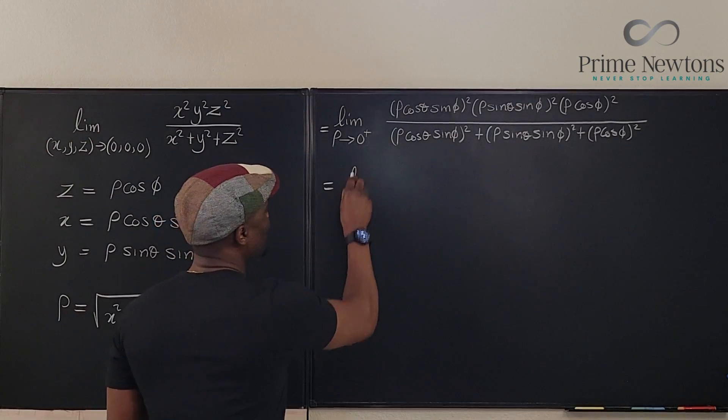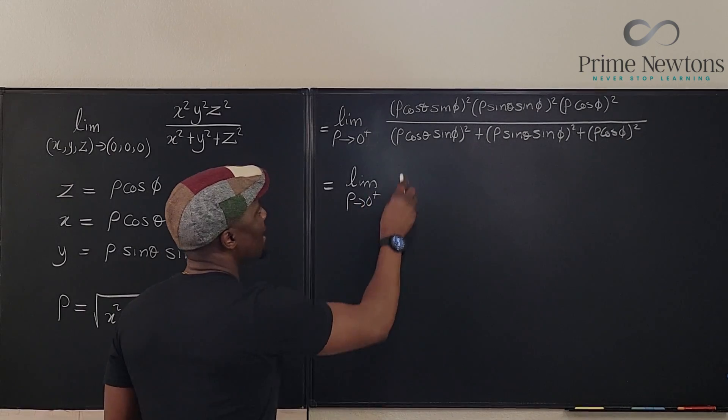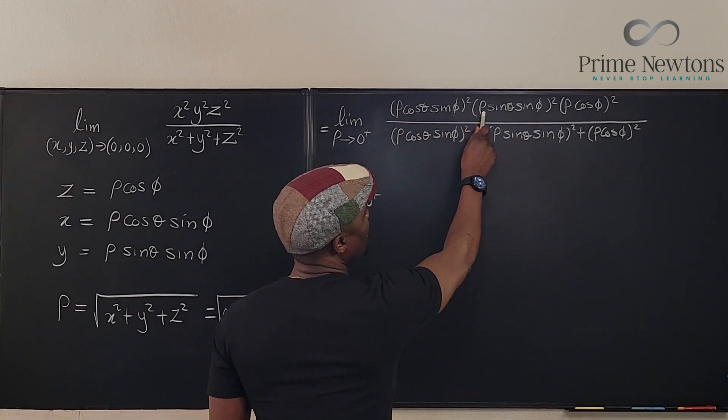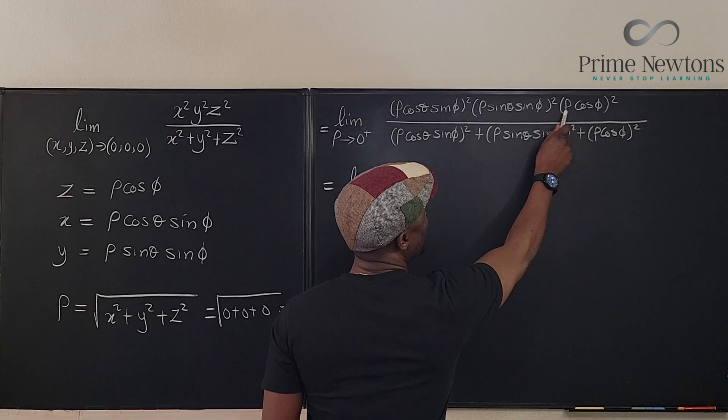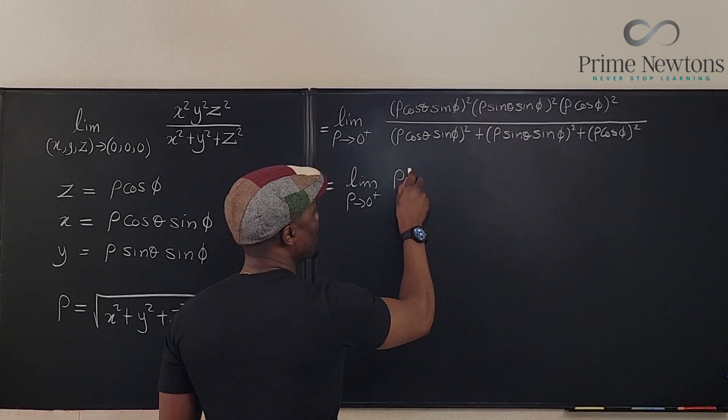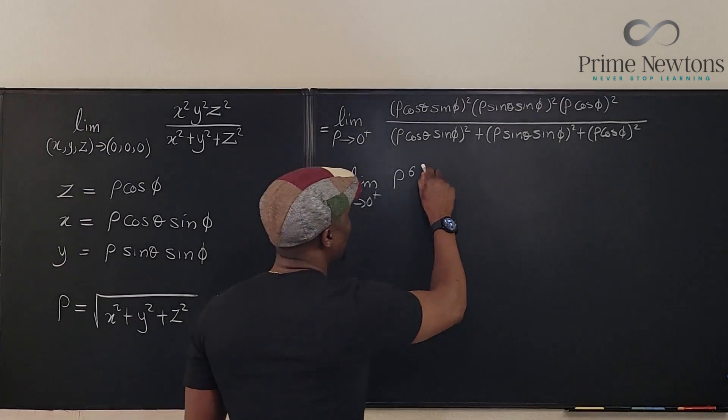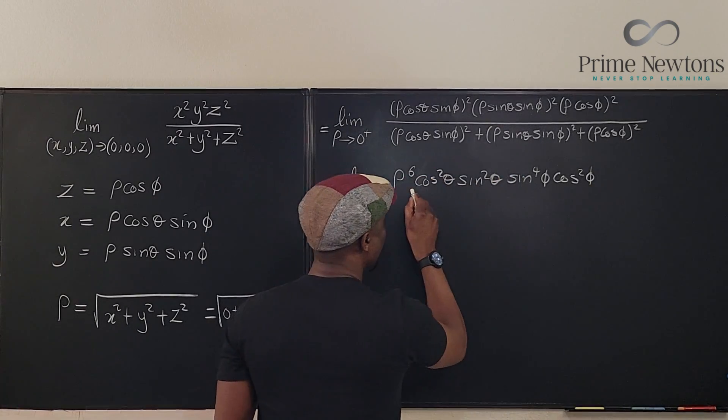So this is now equal to the limit as rho approaches zero from the right. And if you square this, square this, and square this, you're going to get rho squared here, rho squared here, rho squared here. So you're going to get rho to the sixth, actually. And then, okay, and then what do we have in the bottom?